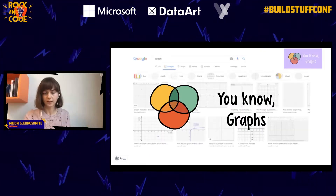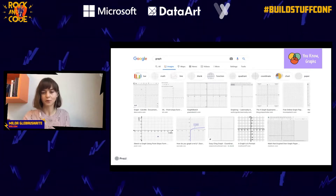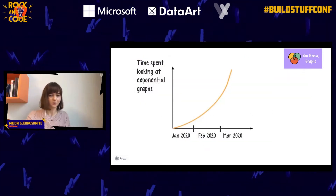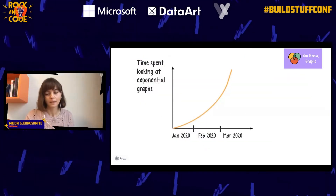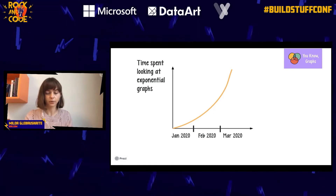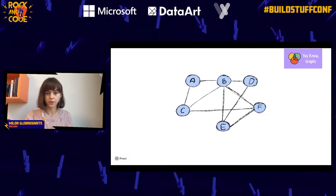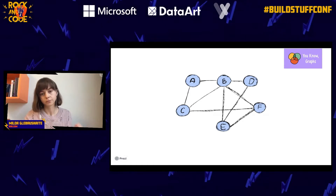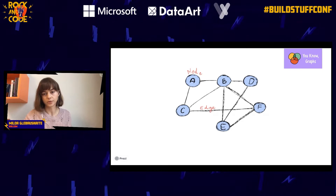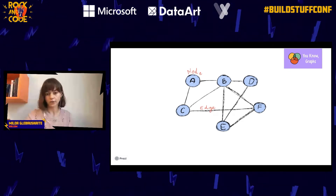When you enter the word 'graph,' it can look many ways — and those are not the types I'm going to be talking about. The type of graph I'm talking about is this type: a structure to represent some objects and the relationships between objects. The circles that represent the objects are called nodes, and the lines that represent the relationships between those objects are called edges.